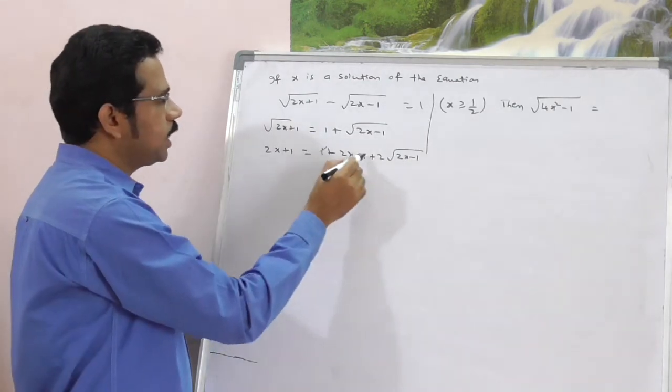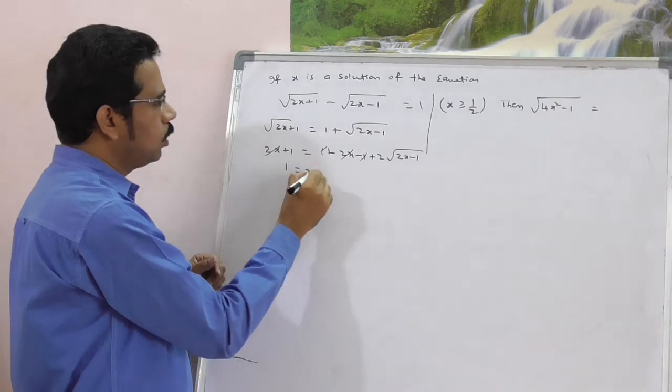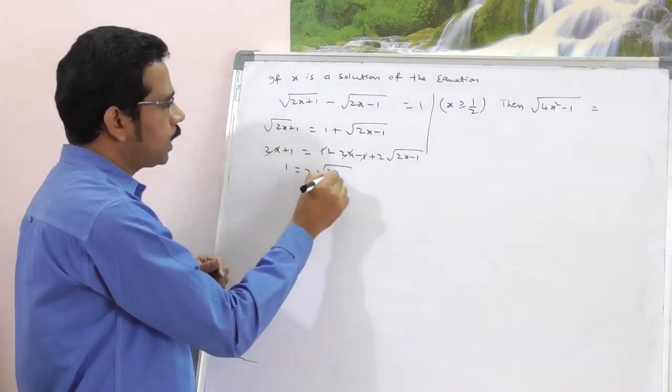So 1, 1 gets cancelled here. This 2x, this 2x gets cancelled. Now, 1 is equal to 2 square root of 2x minus 1.